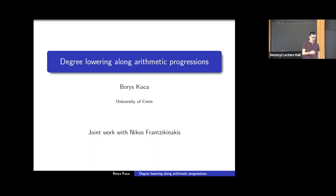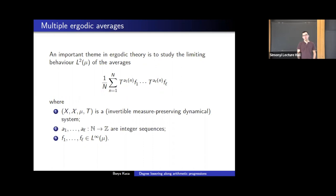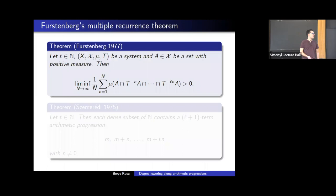Let me now present the setup. We will look at the L² limiting behavior of certain multiple ergodic averages, where we deal with a system — meaning an invertible measure-preserving dynamical system — together with some integer sequences and bounded functions. The reason we care about these averages is, of course, because of Furstenberg's multiple recurrence result.